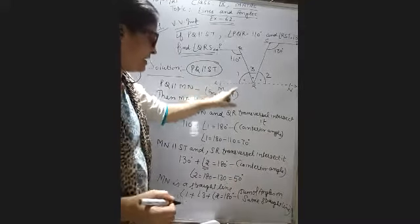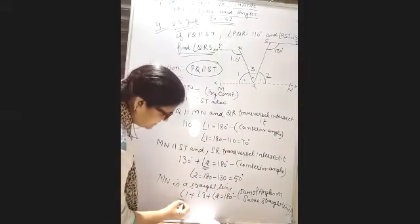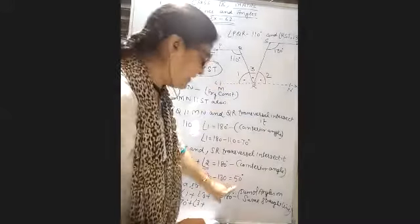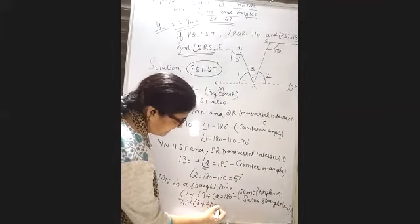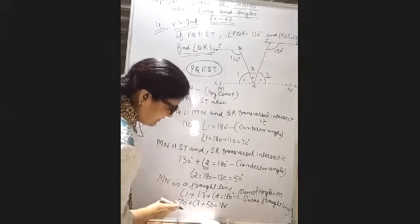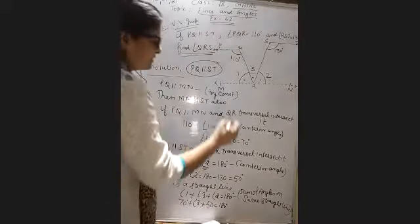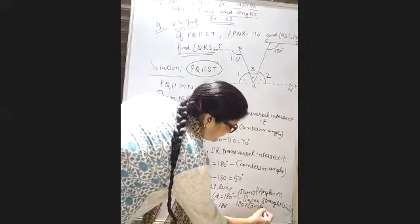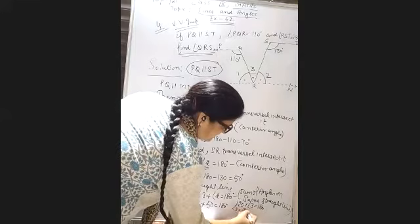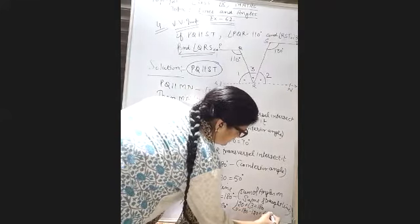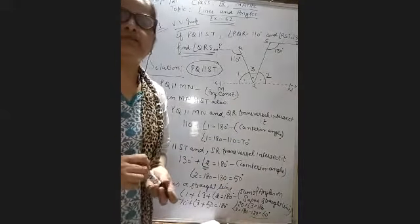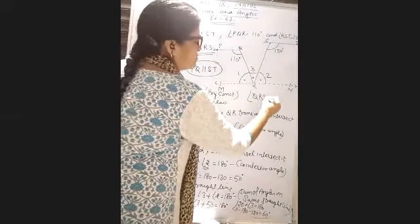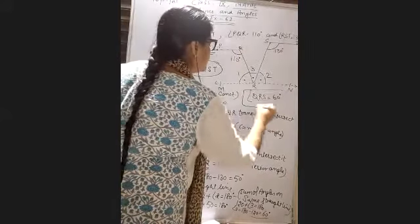Angle 1 is 70, angle 2 is 50. So 70 plus 50 is 120. Then 120 plus angle 3 equals 180. How much is angle 3? 180 minus 120 equals 60 degrees. So your angle QRS equals 60 degrees.